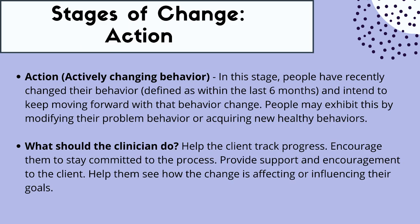In the action stage, the behavior change is actively taking place. They're actively changing the behavior and doing what they set out to do. People have recently changed their behavior — defined as within the last six months — and intend to keep moving forward with this behavior change. For example, dramatically cutting back on nighttime screen time: putting the phone away, doing meditation, and not getting the phone out at nighttime. People might exhibit this active change by acquiring new habits — maybe instead of being on the phone before bed, now listening to a guided meditation, modifying behavior to something more healthy and productive.